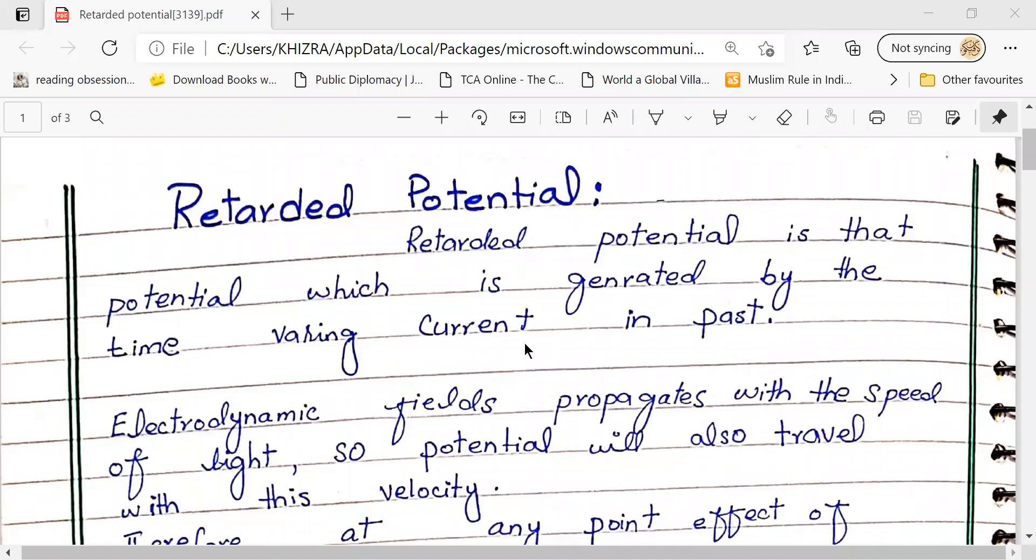Hi, Assalamualaikum. Today we have studied retarded potential. We have been studying potential-related topics - we have studied potential, scalar potential, vector potential equations. Then Maxwell equations - we have seen potentials in the form of Coulomb gauge transformation. We have used potential equations. Today we have studied retarded potential.